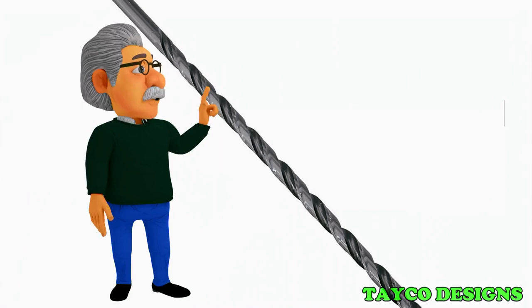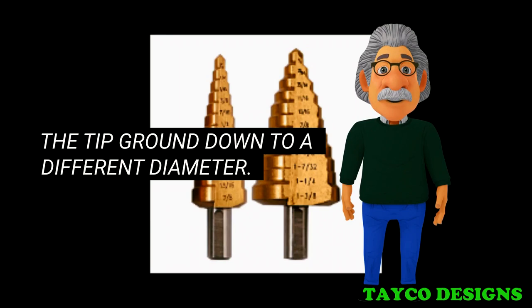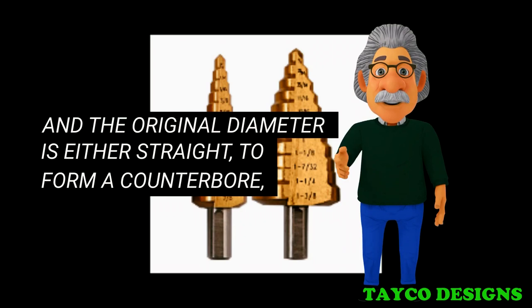Instead, gun drill bits are preferred for deep hole drilling. Step Drill Bit. A step drill bit is a drill bit that has the tip ground down to a different diameter. The transition between this ground diameter and the original diameter is either straight, to form a counterbore, or angled, to form a countersink.